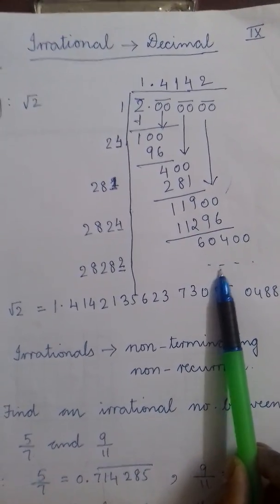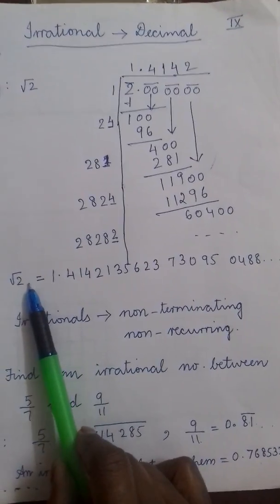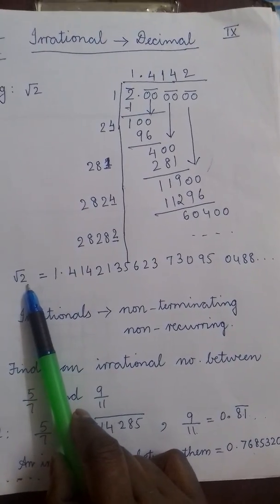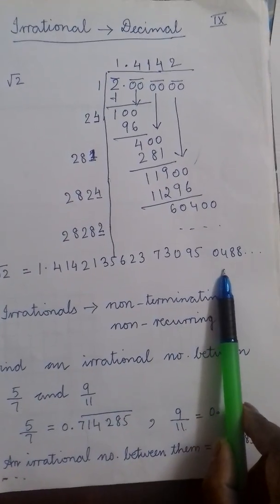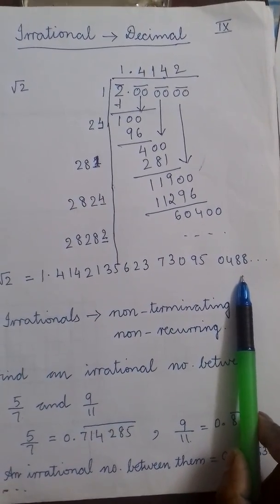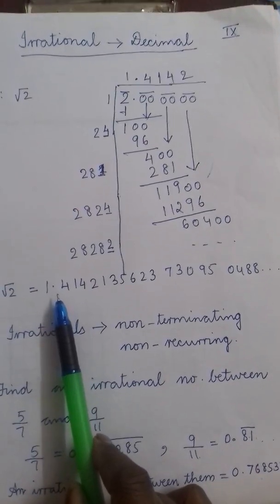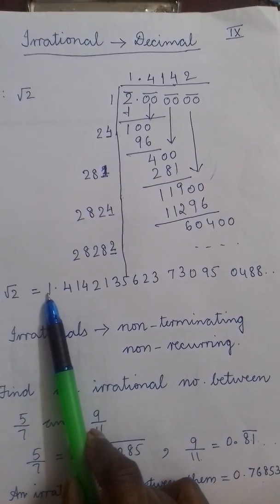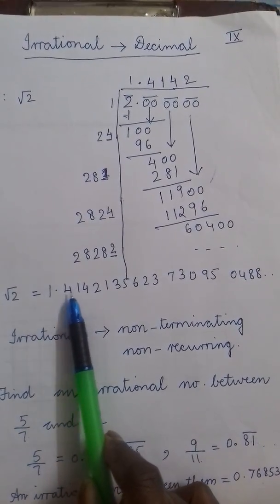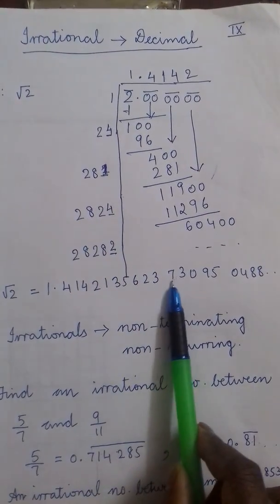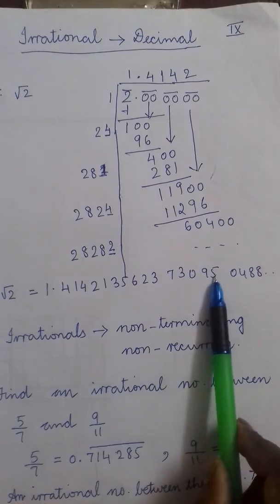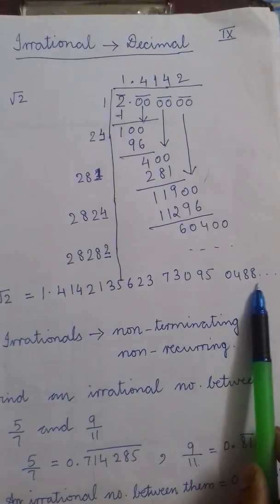In olden times, many mathematicians tried to find out the decimal value for root 2. Here a set of values, few decimal numbers are written here. Its value goes like this 1.4142135623730950488 etc.